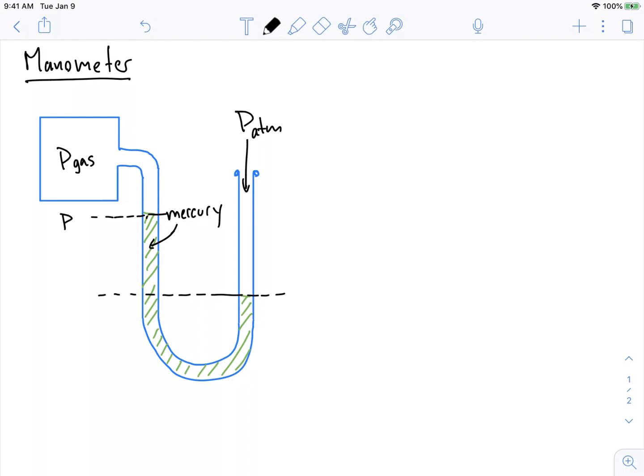So I'm going to call this P gas. And then down here, this is P atmosphere acting here. And there's some height difference between these two lines. That's called h.